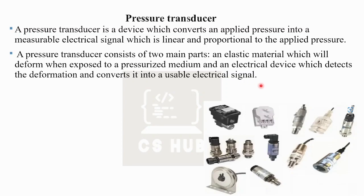If we apply pressure or force, there will be deformation. This deformation results in a resistance change. The strain gauge detects this deformation and converts that deformation into a usable electrical signal.